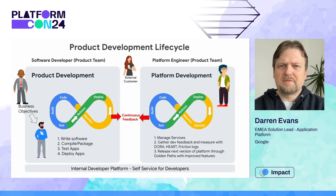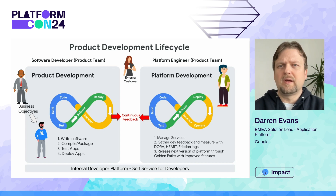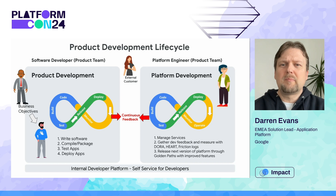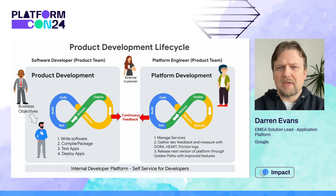Here we have two product teams — one doing software development and the other platform development. The product development lifecycle looks like this, however there are some differences between the two. The software developers focus on writing, testing, and deploying code. The platform engineers are also focusing on managing and creating reliable platforms, gathering feedback via frameworks, and iterating this life cycle.